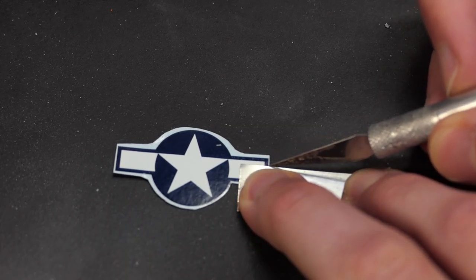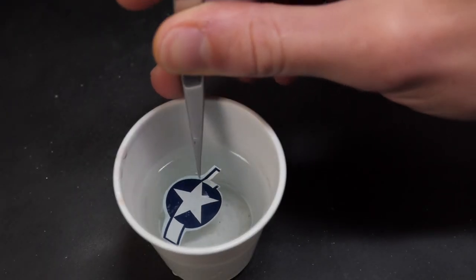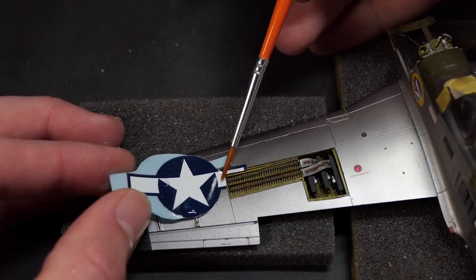Don't forget to slice a section off the decal that is on the removable panel. This is much easier before you dip it in water.